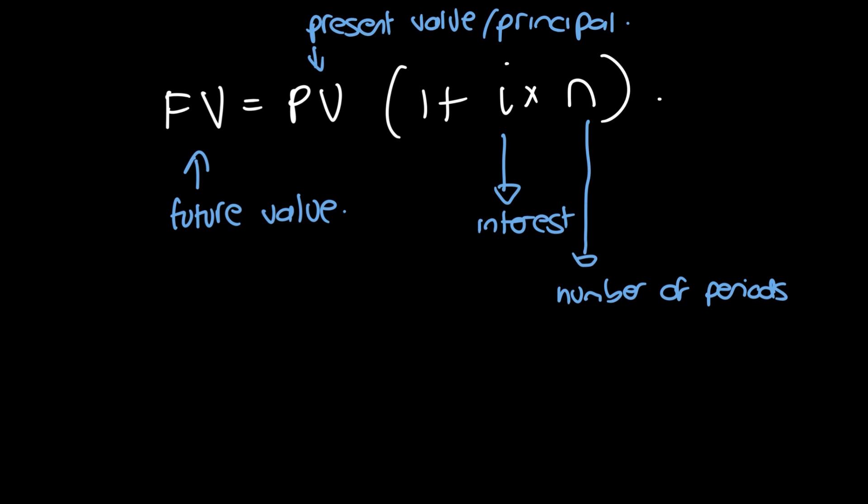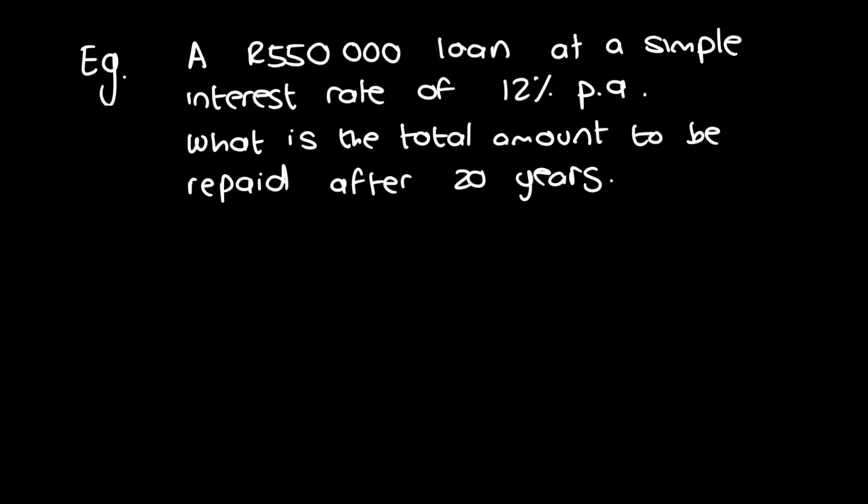Right, so let's do some examples. So we have a R550,000 loan at a simple interest rate of 12% per annum. Then we ask, what is the total amount to be repaid after 20 years? So we're looking for the future value. So let's first write down the formula. So the formula is the future value is equal to the present value multiplied by 1 plus i times by n. And in this case, our future value, the thing we're looking for, is also the subject of the formula. So we don't have to make any changes here.